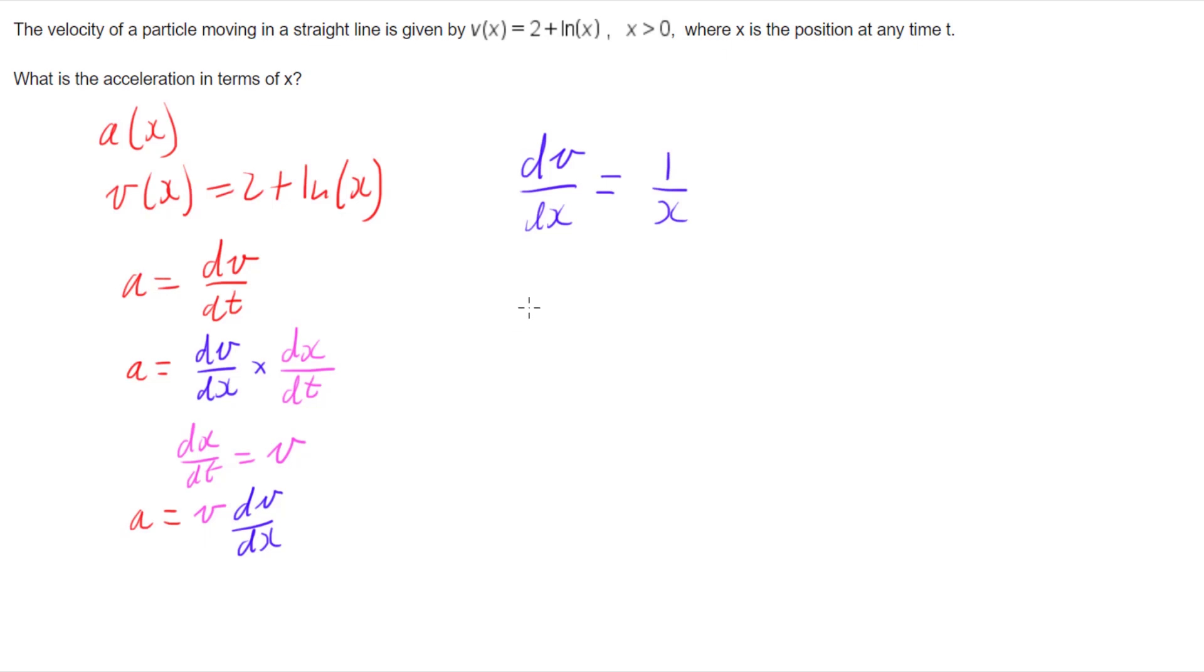So now if I go back to my acceleration equation, I want the velocity, and I've got velocity up here: it's 2 + ln(x). And then I've got to times that by the derivative of velocity with respect to position, which is 1/x. So our equation becomes (2 + ln(x)) all over x.